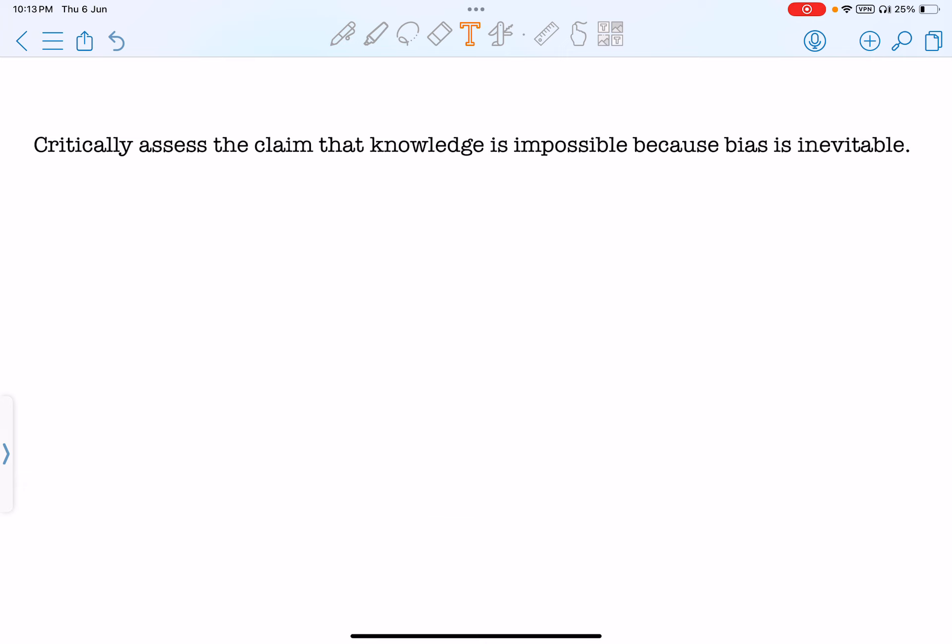So first, the claim is that knowledge is impossible. Why? Because bias is inevitable. So, is this claim drawing a causal link between bias and knowledge? Yes. If this is A and this is B, the question is essentially saying A cannot happen because of B. So, B does not lead to A.